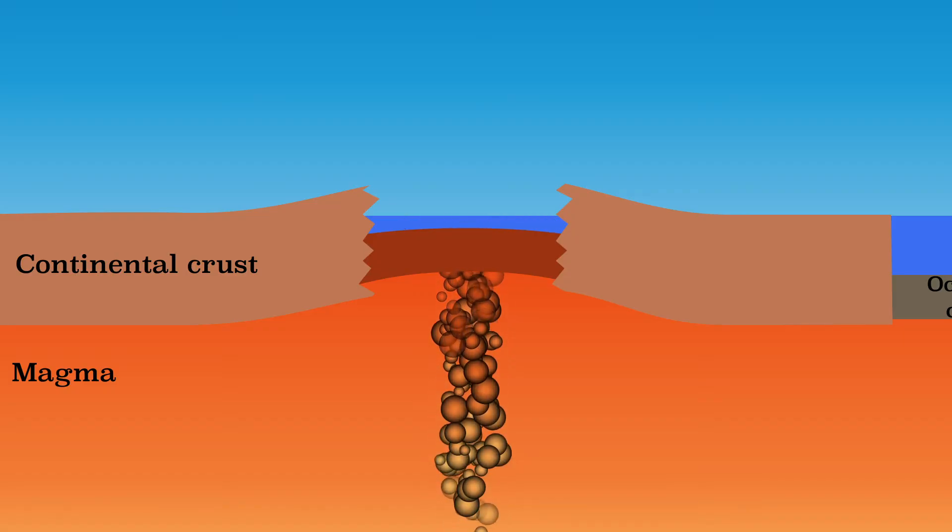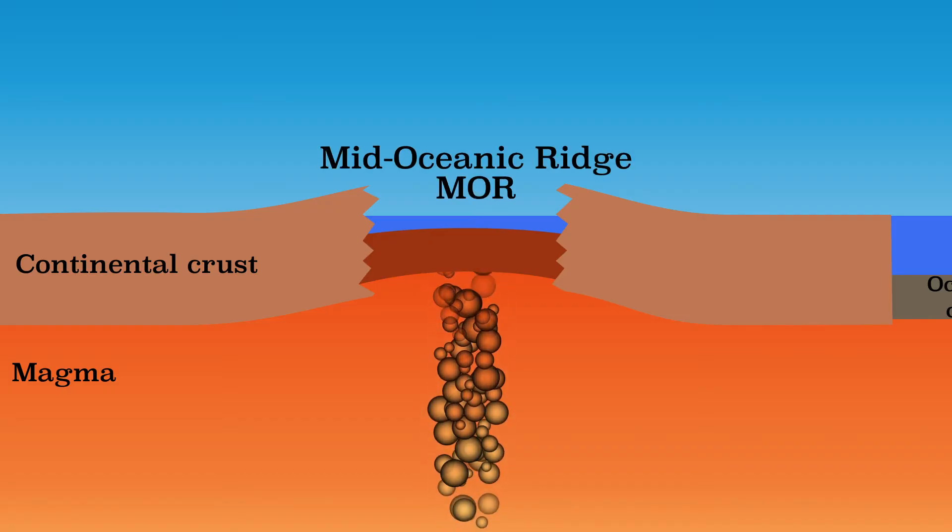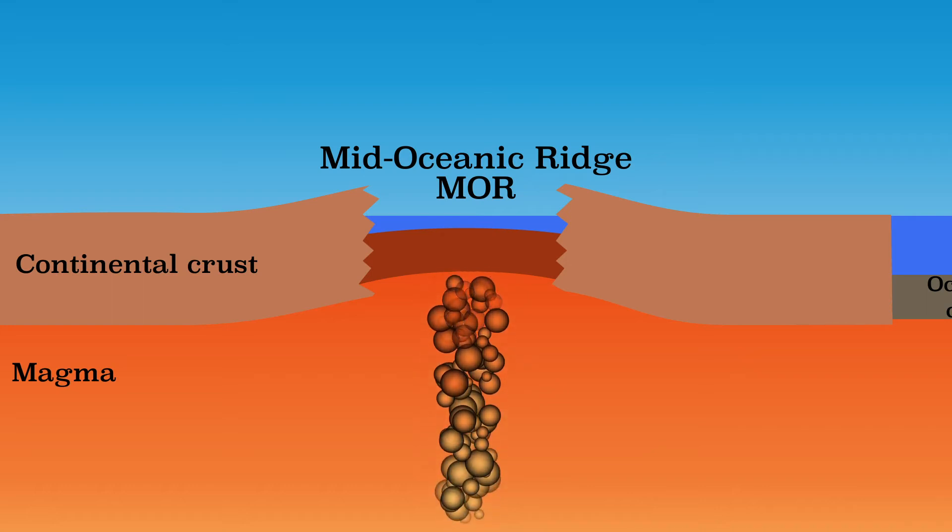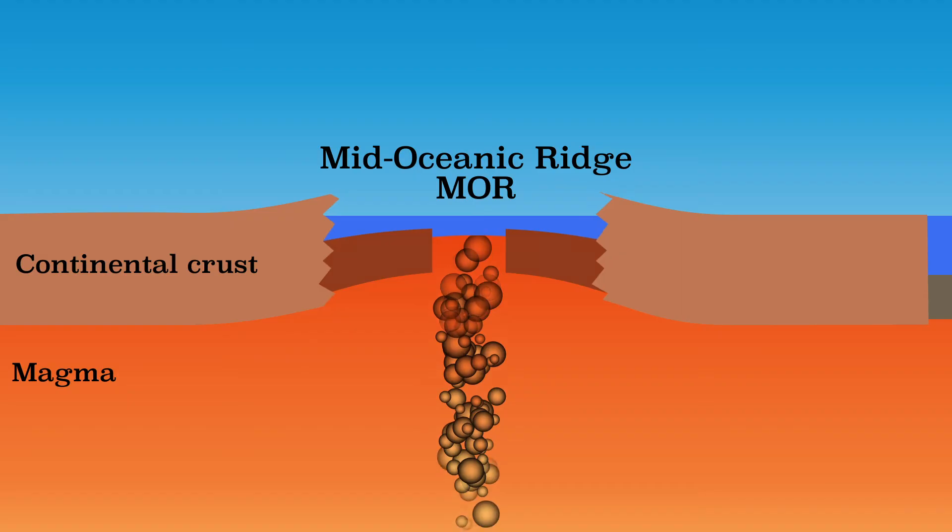As a result, places where the plates move apart are also called mid-oceanic ridges. Close to the mid-oceanic ridge, the oceanic crust is relatively young and also warm. Over time, the crust moves away from the mid-oceanic ridge.